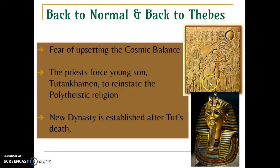Because of fear of upsetting the cosmic balance and betraying earlier beliefs, the priests forced the young son — probably well known to you — Tutankhamen, King Tut, to reinstate polytheistic religion. This king was actually very weak and didn't rule for very long, but the discovery of his mummy and treasures made him famous in modern history even though he wasn't very powerful at the time. His family was very unpopular, so when King Tut died, they went back to a new dynasty and re-established their earlier religion.